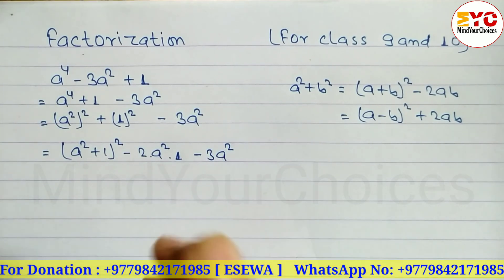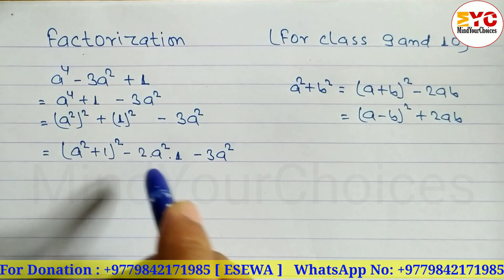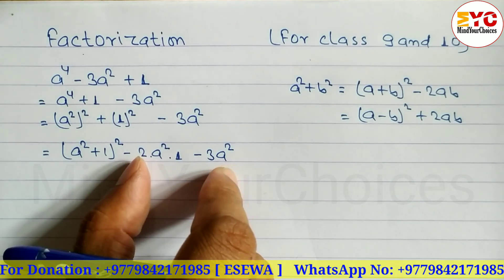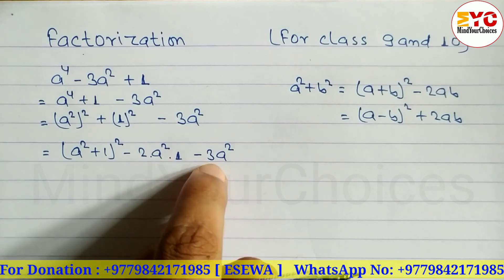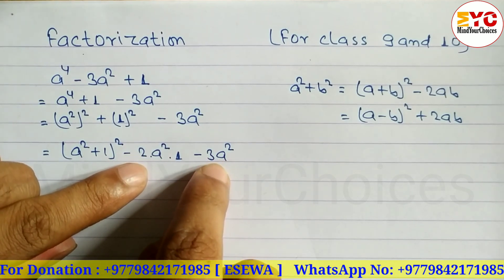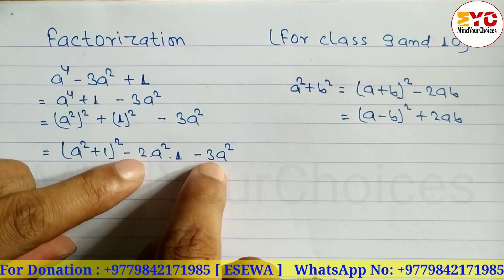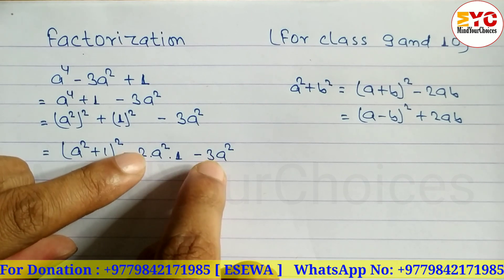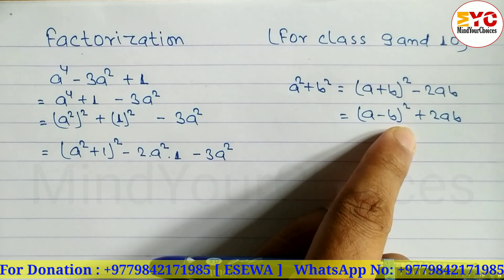Now we have to decide which formula to use — it depends on whether we can convert the combined term into a perfect square. Looking at this part: minus 3 and minus 2 are like terms, so we add them to get minus 5. The square root of 5 gives a decimal, so we cannot convert into the form of a perfect square. This means we have to use the other formula.